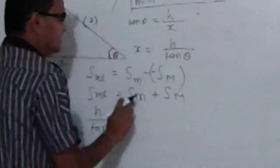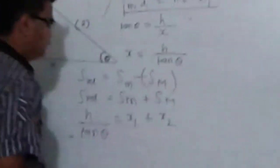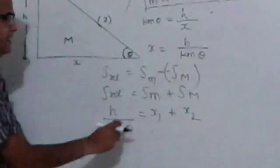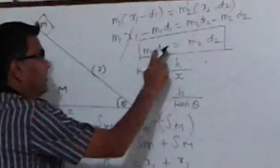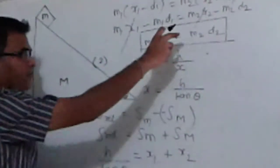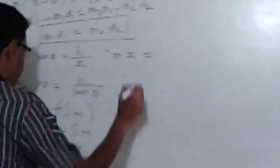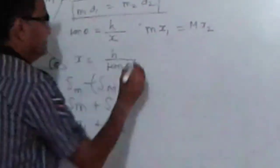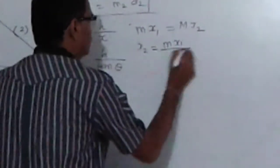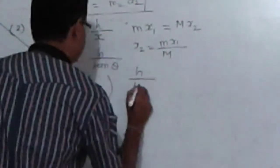This equals the distance moved by the small block, x1, plus distance moved by the bigger block, x2. So h upon tan θ must be equal to x1 plus x2. Now look at this equation M1*d1 = M2*d2 which we have just proved. Applying this in this case, I will have small m into x1 equals capital M into x2. So x2 will become m into x1 upon capital M.